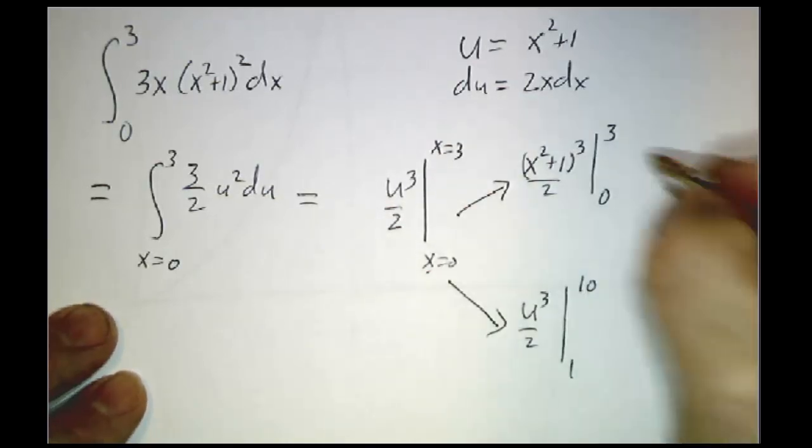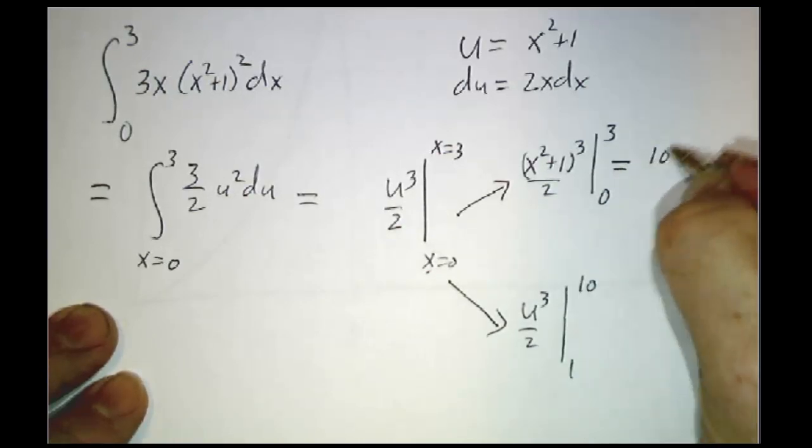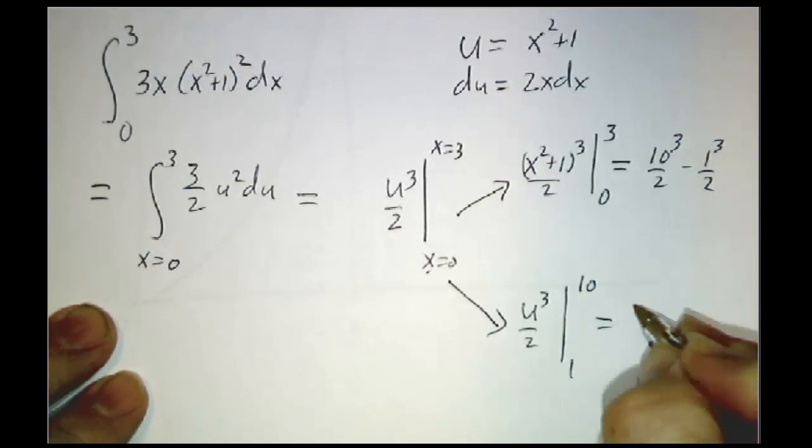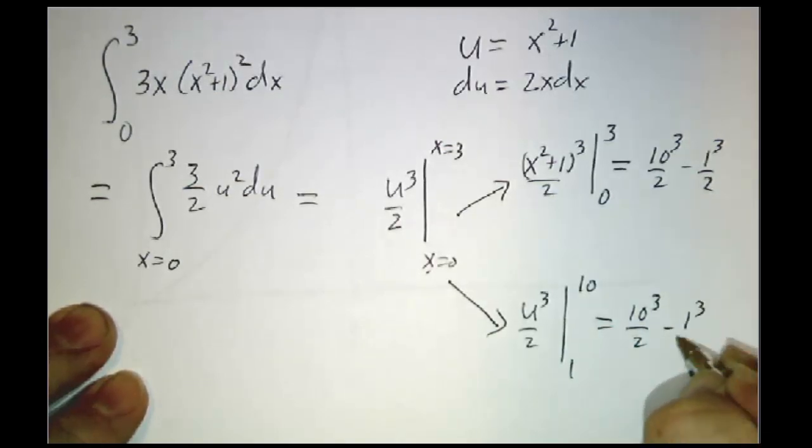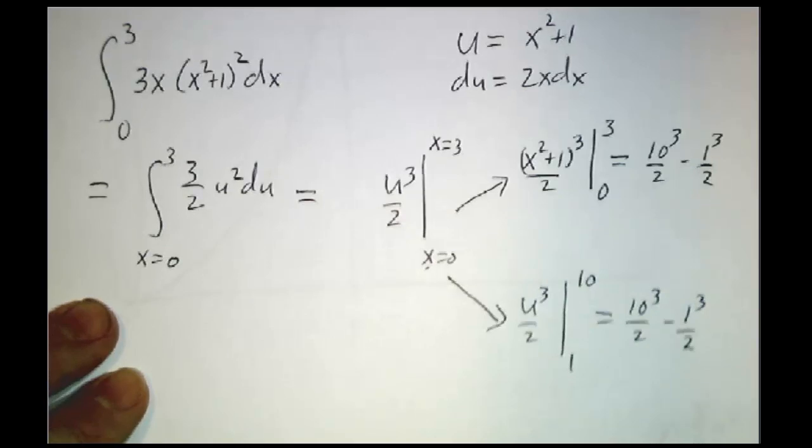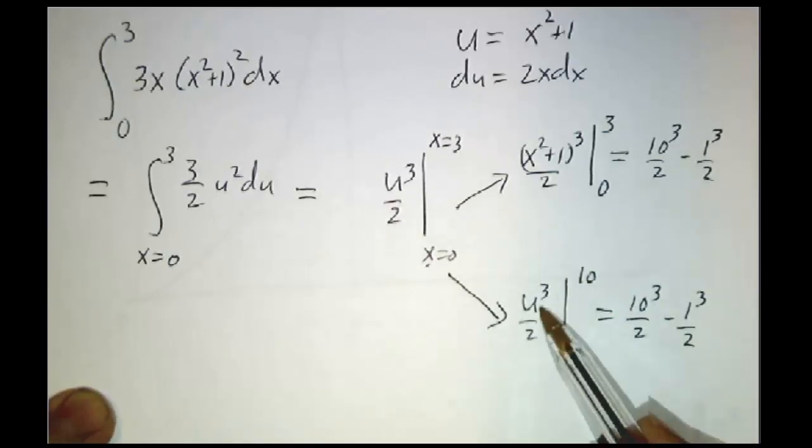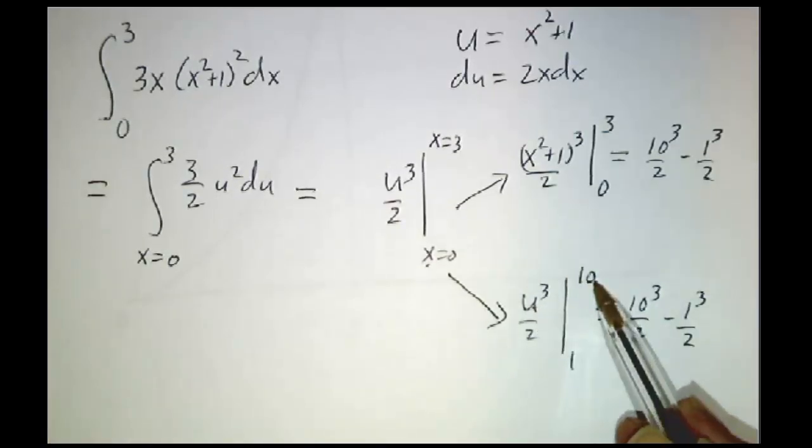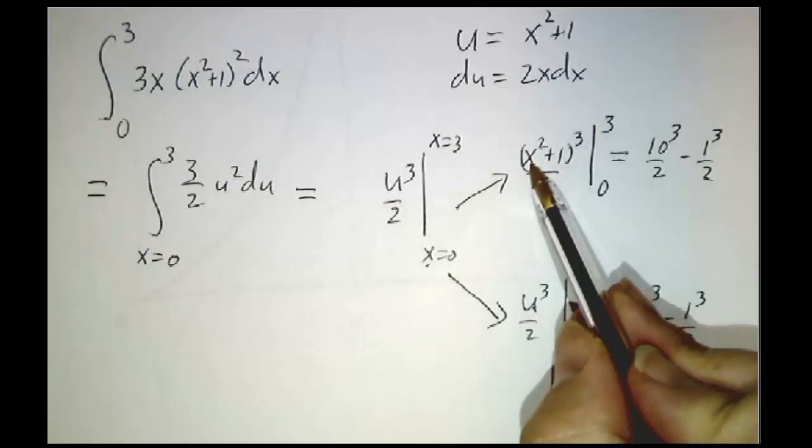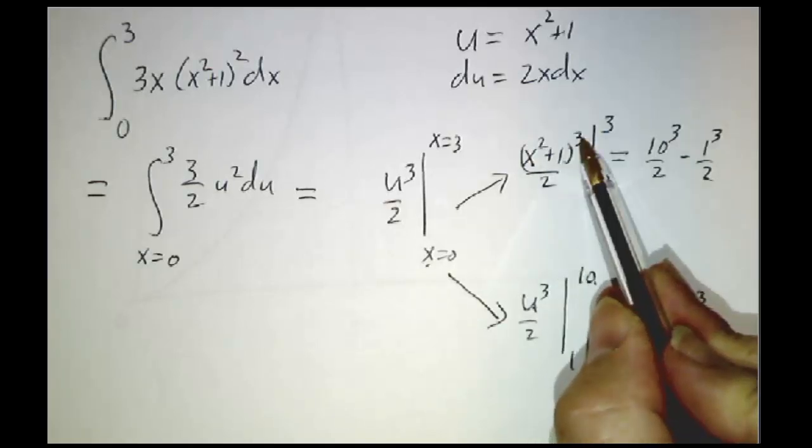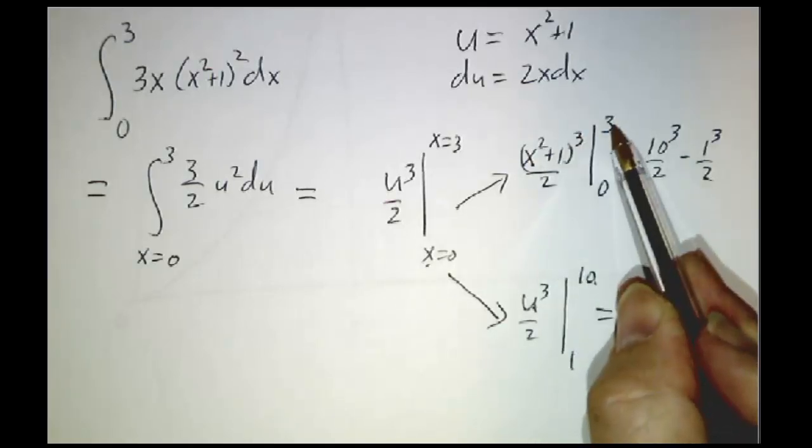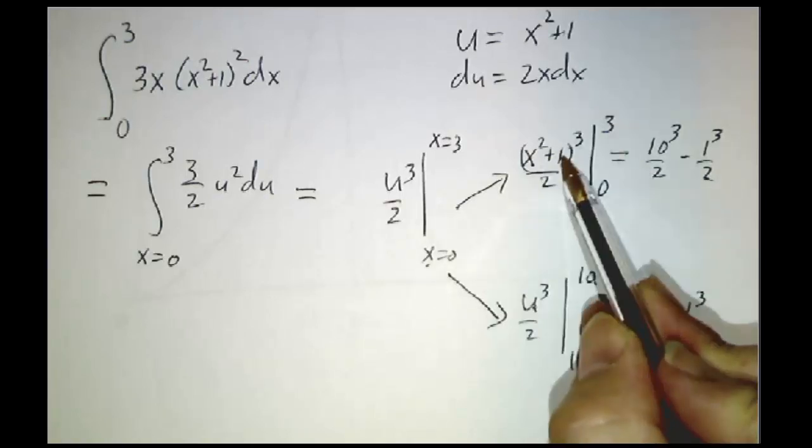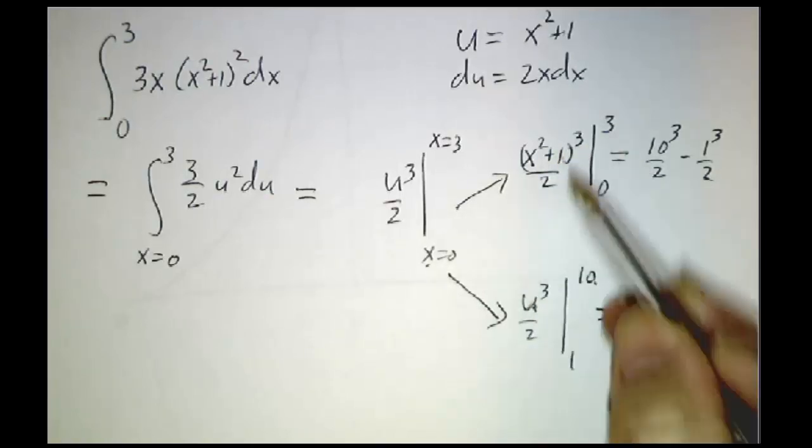Now, whichever way you do it, you're going to get 10 cubed over 2 minus 1 cubed over 2. This is 10 cubed over 2 gives you the same answer, but here you get 10 cubed by saying, I want u cubed and u is 10. Here you're saying, I want x squared plus 1 cubed and x equals 3. But if x is 3, x squared plus 1 is 10 and it's the same 10 cubed.